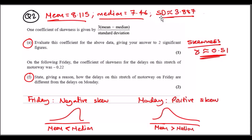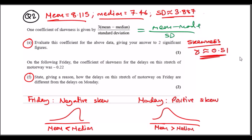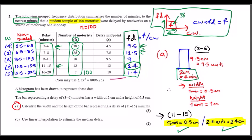For part (e), the coefficient of skewness formula is three times (mean minus median) over standard deviation. An alternative form uses (mean minus mode) over standard deviation. Plugging in the values for Monday's data gives a skewness of approximately 0.51 to two significant figures. The original data refers to Monday, as stated at the beginning of the question.